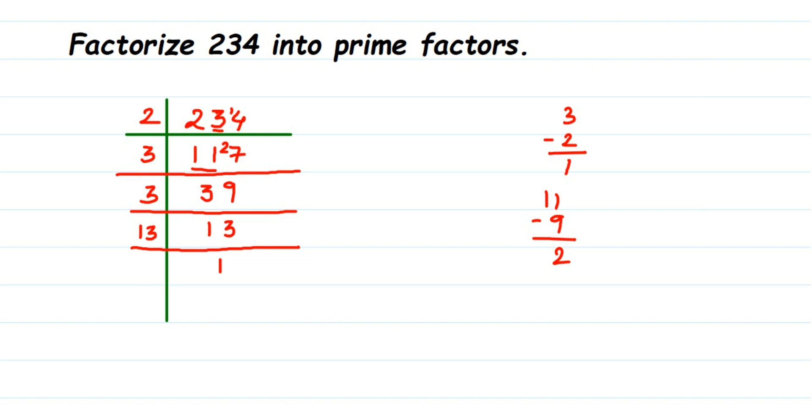We're going to rewrite this once again. So 234 is equal to—write down all these prime factors what we got—so it's 2 into 3 into 3 into 13.